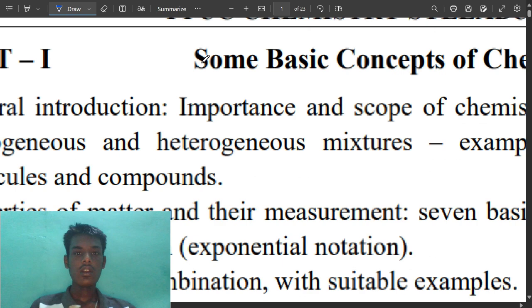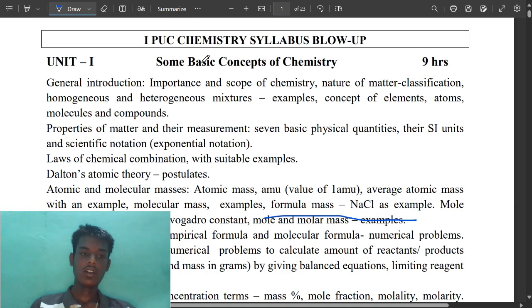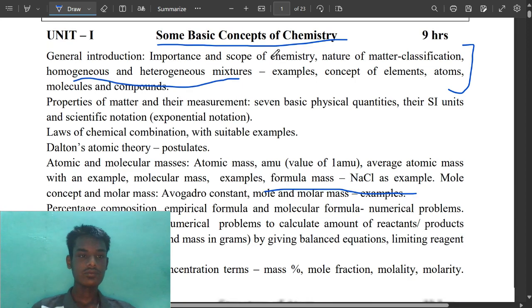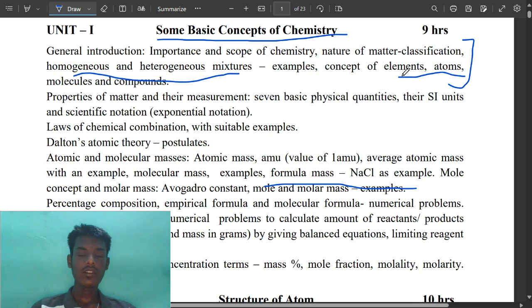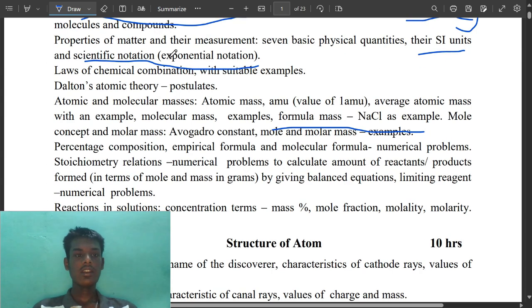Let's start our video without wasting our patience. First we have some basic concepts of chemistry. General introduction, importance and scope of chemistry is very important. Homogeneous and heterogeneous mixtures, concept of element, atom, molecule and compound, and properties of matter. Significant figures and scientific notation, which is also called exponential notation.